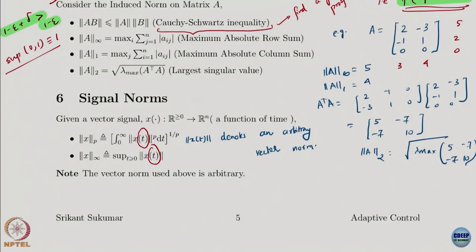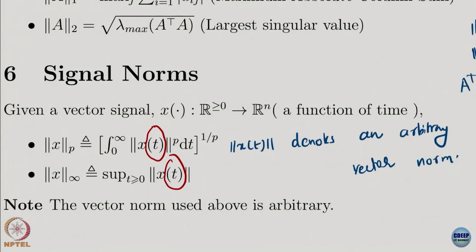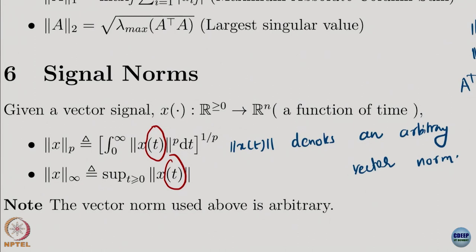The infinity signal norm is the supremum over all time of the vector norm. The vector norm used is arbitrary — not necessarily the P norm. For example, if you are computing the 2-signal norm, the vector norm you use does not have to be the 2-norm; it can be the 1-norm. The only rule is: for a single problem, stick to the same vector norm throughout. Do not switch between 1, 2, 3 — you will not get consistent results.